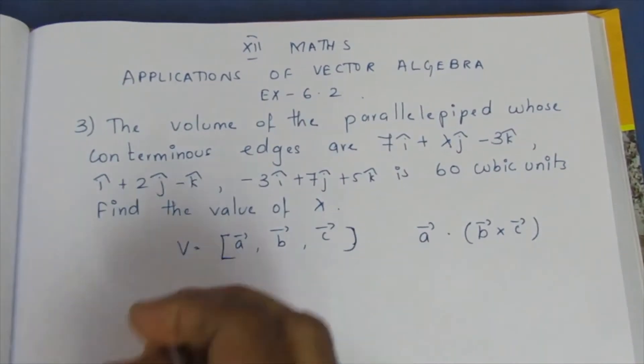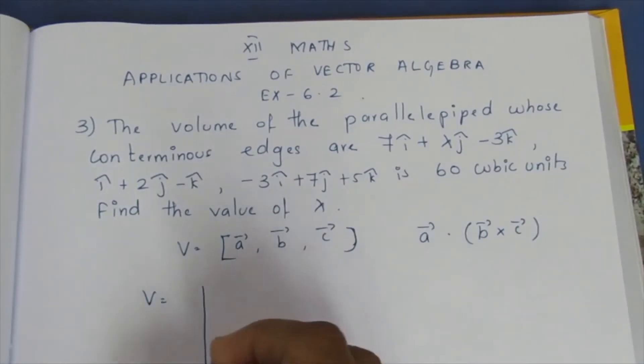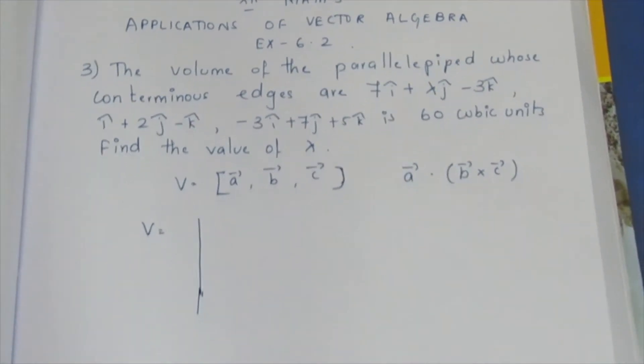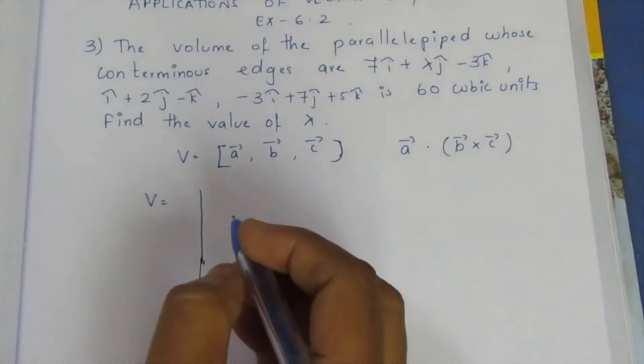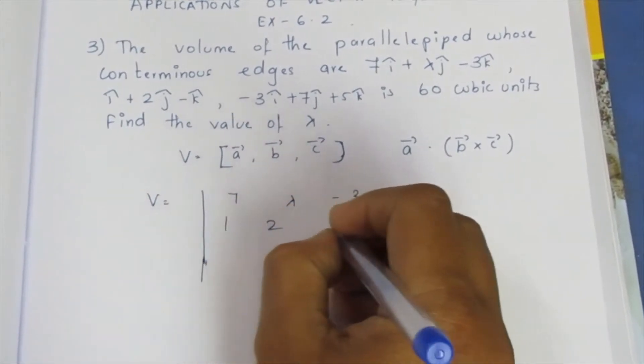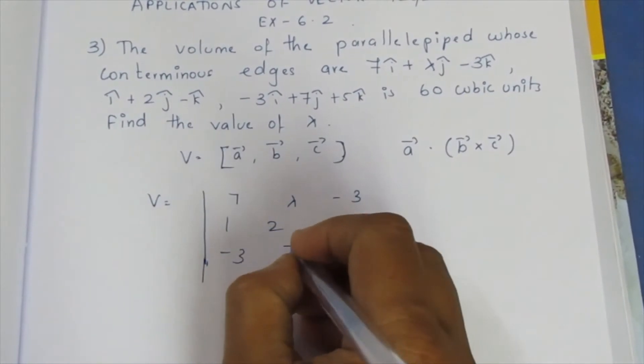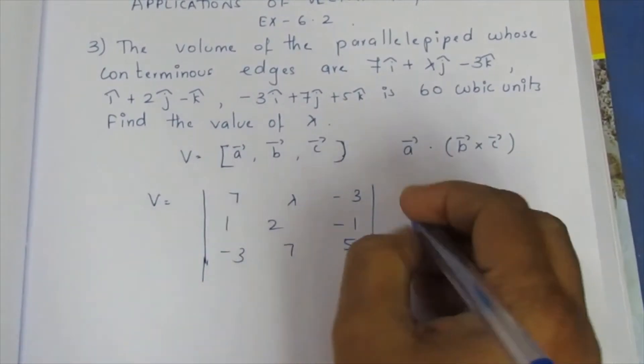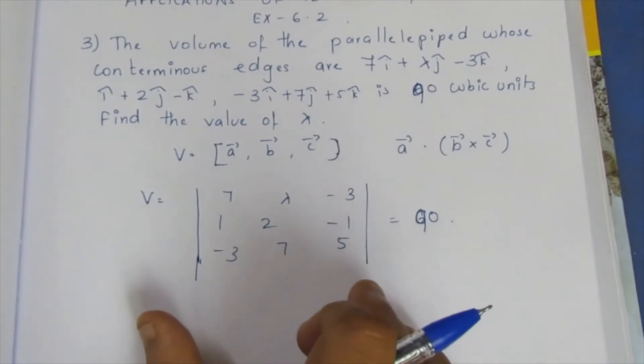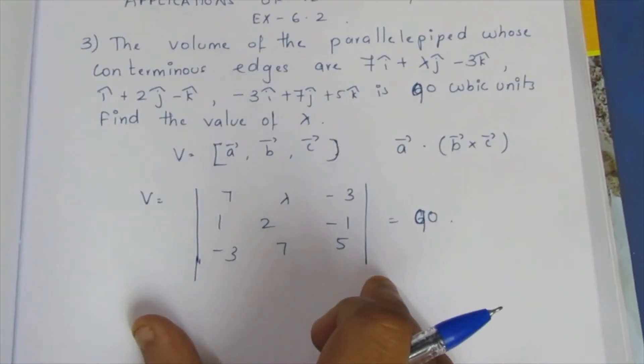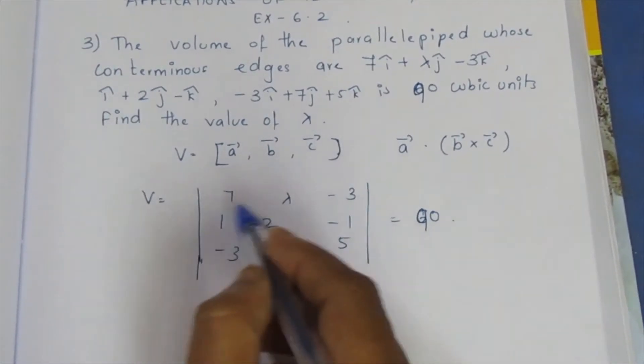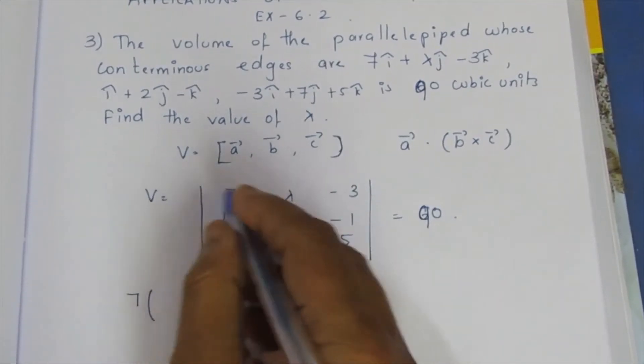Direct values. So volume equal to determinant. The determinant, this row in the column.